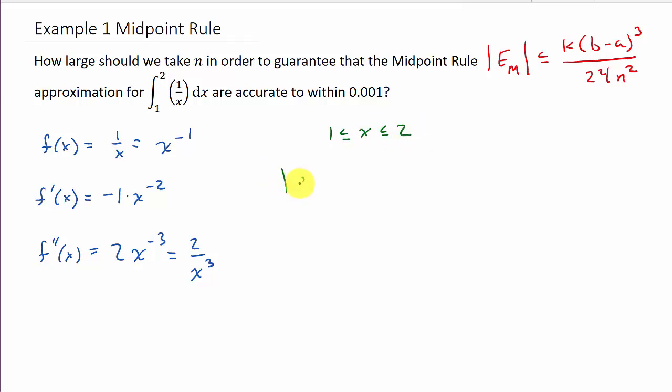So, I've got absolute value f double prime of x is equal to absolute value 2 over x cubed. And what do we know that this is less than or equal to? This one, this one's one of the easier ones to find. Because we're only interested in x values that are between 1 and 2. Well, look at this. If I plug 1 in, I get what? 2.